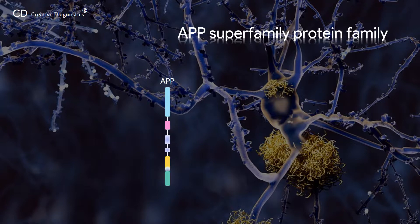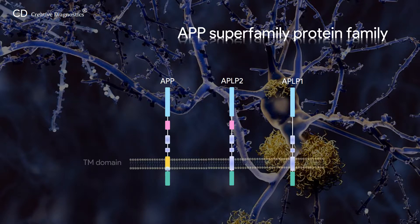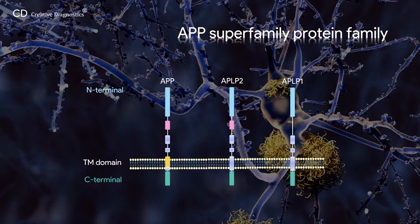The APP superfamily includes APP itself and amyloid precursor-like protein 1 and 2 in mammals. All of them are single-pass transmembrane proteins with a large extracellular N-terminal and a shorter cytoplasmic C-terminal. The APP superfamily shares several conserved domains; however, only APP generates an amyloidogenic fragment owing to the unique abeta domain in sequence divergence. Though expressed in many tissues, APP is concentrated in the synapses of neurons in the central nervous system.